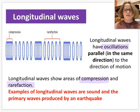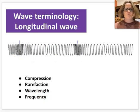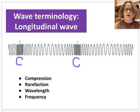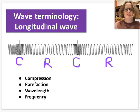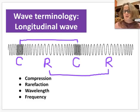Let's label the diagram of a longitudinal wave. Compression is where coils are squeezed together — you can see areas of compression on the wave. Rarefaction is where the coils are spread apart. The wavelength of a longitudinal wave can be measured from one compression to the next, or between two areas of rarefaction.